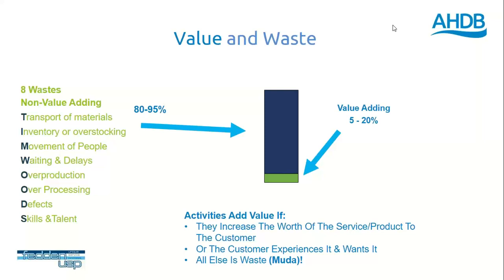We identify as much waste as possible, with the idea of reducing it to free up more capacity for value-adding operations — things you can charge for and add value to the customer. Movement of people covers walking to find tools, equipment, or products to carry out picking operations. Waiting and delays can include waiting for pick lists to be generated or for forklifts. Overproduction means producing more than required — for example, packing more than the customer specification requires.